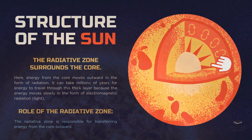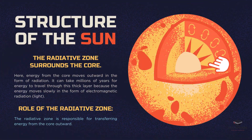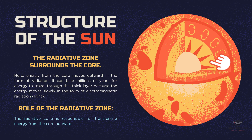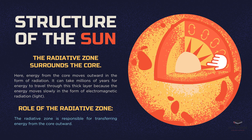Surrounding the core is the radiative zone. Energy from the core travels through this zone in the form of electromagnetic radiation, or light. The energy transfer is a slow process — photons can be absorbed and re-emitted numerous times, resulting in timescales of millions of years for energy to travel through this zone.